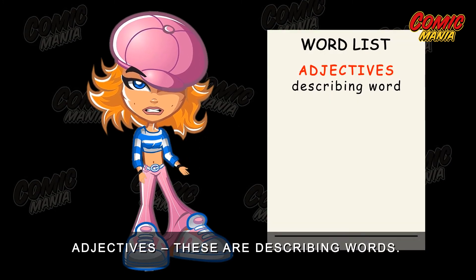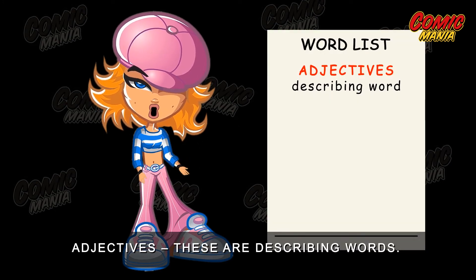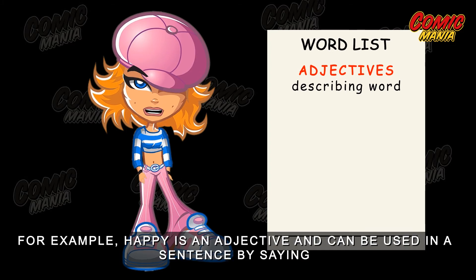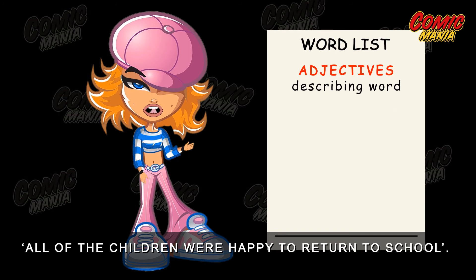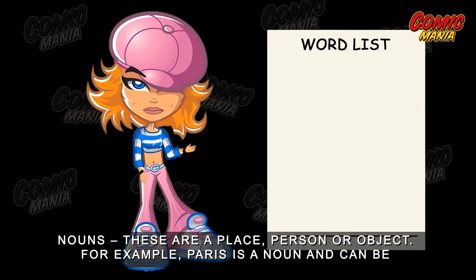Adjectives. These are describing words. For example, 'happy' is an adjective and can be used in a sentence by saying, 'All of the children were happy to return to school.'